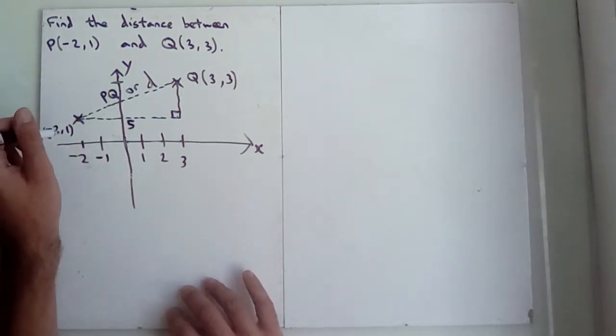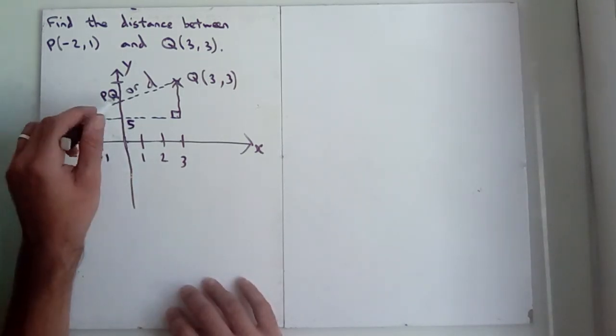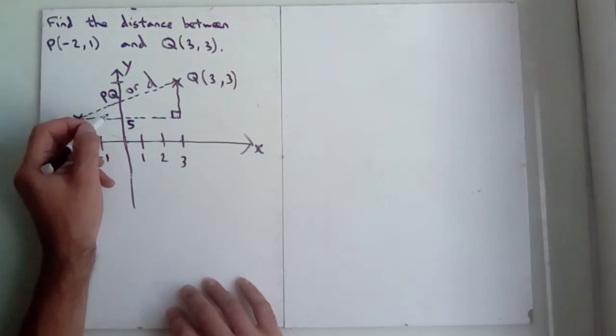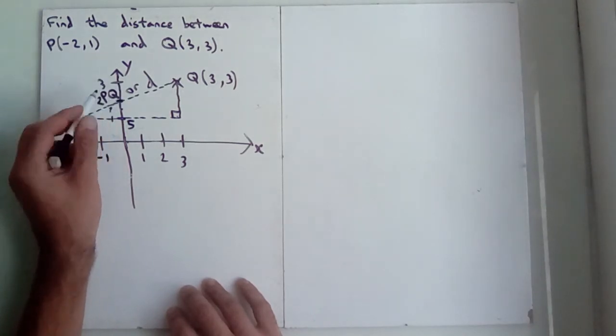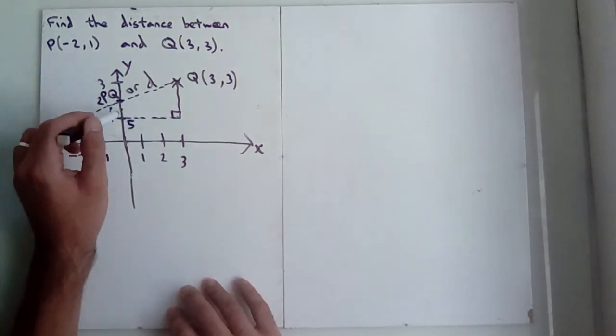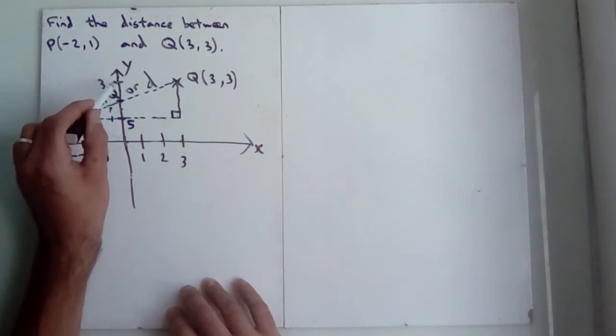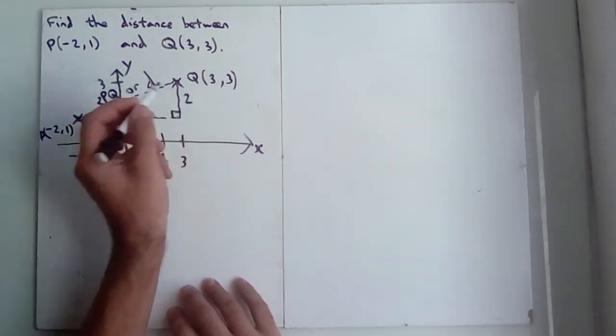If I do something similar here, this was from 1 to 3. So if this is 1 over here, and this is 3, 2 must be somewhere in the middle of those 2. So this one here, from 1 to 3 is 1, 2. This has a length of 2.